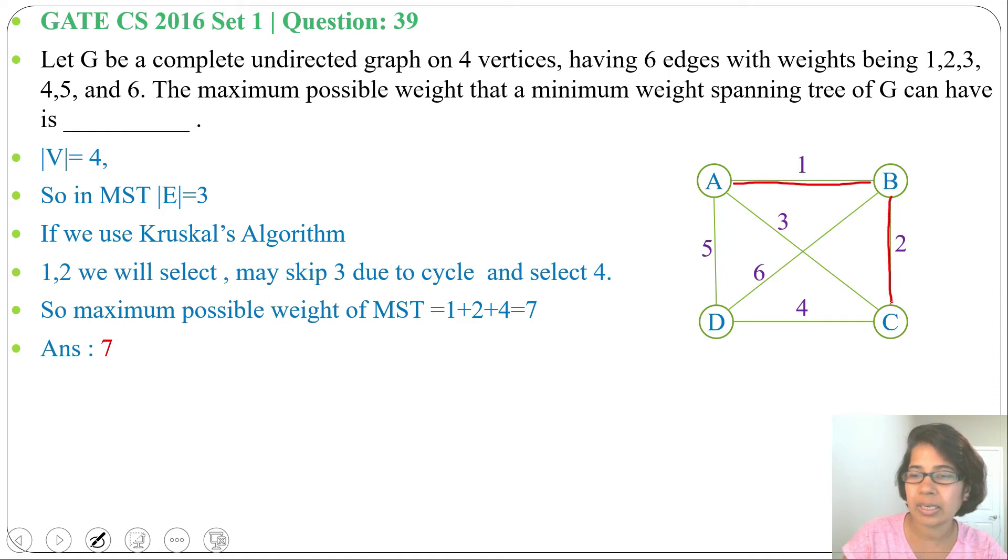Next we'll choose BC edge weight 2. Next we need to skip weight 3 as it is creating a cycle. So we'll skip it and we'll choose CD edge, that is weight 4.